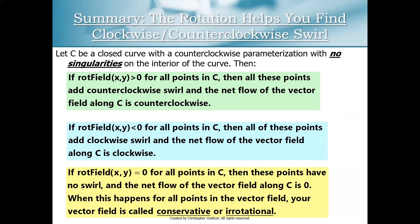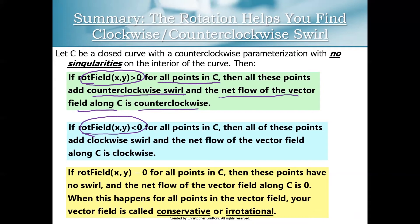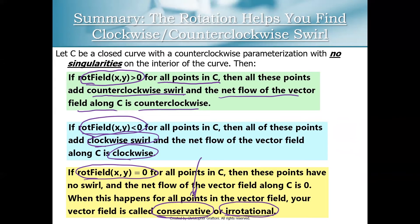We could do the same thing with rotation. When the rotation of the vector field is positive, that point adds a counterclockwise swirl, and when that's true for all points inside your curve, the net flow along the curve is counterclockwise. If the rotation is negative for all points, they all add clockwise swirl, and the net flow is clockwise. When the rotation equals zero for all points, you'd call it either a conservative vector field or an irrotational vector field — conservative in a physics context, irrotational in a fluid dynamics context.